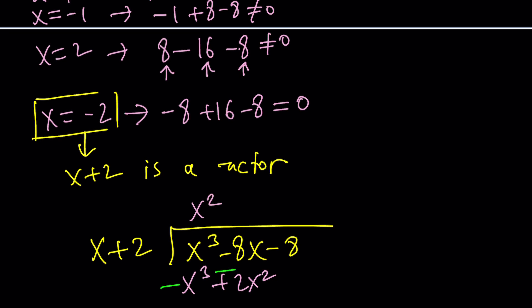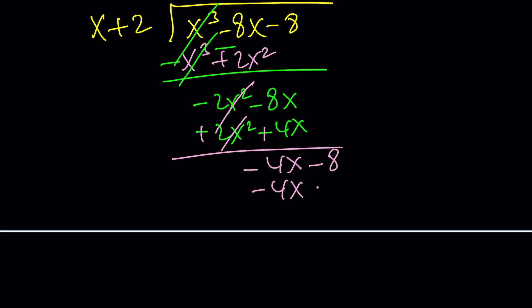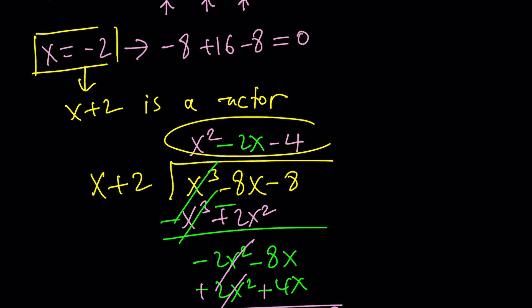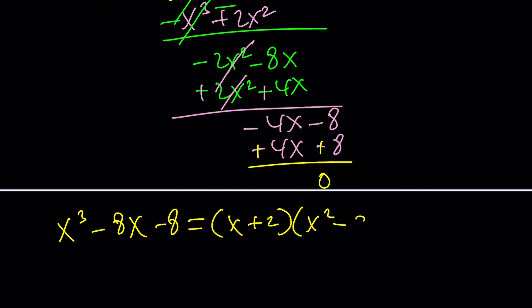x goes into x³, x² times. Distribute you're going to get x³ + 2x². Negate and add. These two are going to cancel out. We're going to end up with -2x² - 8x that goes -2x times and if you multiply you're going to get this and then I'm supposed to negate and add. That's going to give you -4x. Bring down the -8. Now you have -4 times and we have a zero remainder which is expected. So here's the other factor x² - 2x - 4.